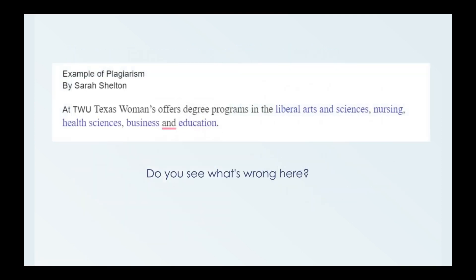Here is an example of plagiarism I quickly wrote up. At TWU — and you can see here that something is messed up because it says 'At TWU, Texas Women offers,' so Texas Women's is said twice basically. But the sentence reads: 'At TWU, Texas Women's offers degree programs in the liberal arts and sciences, nursing, health sciences, business, and education.' Do you see what's wrong here?